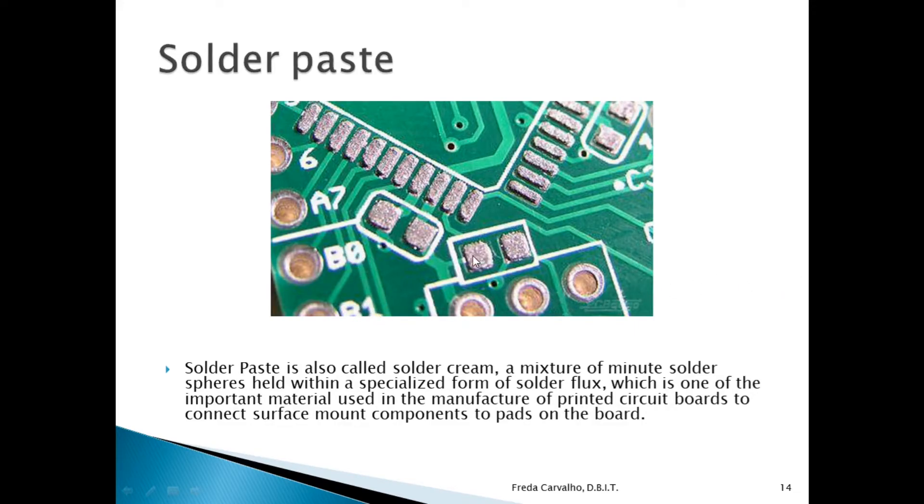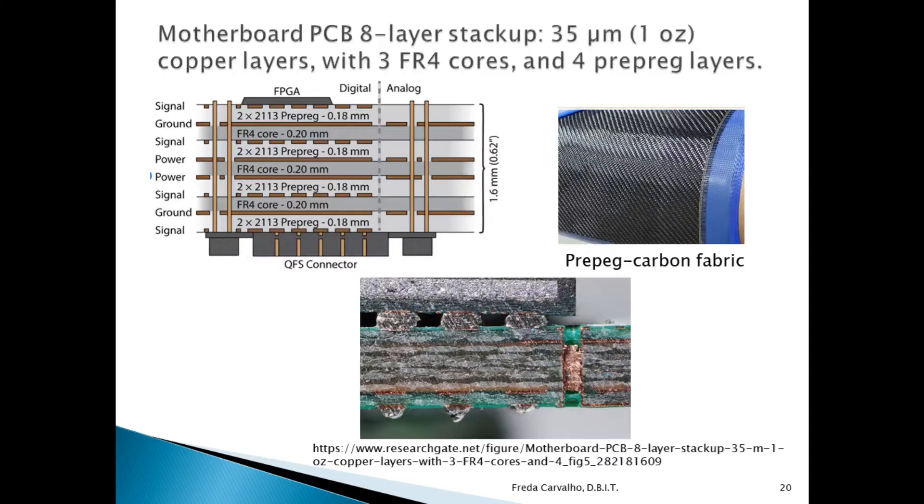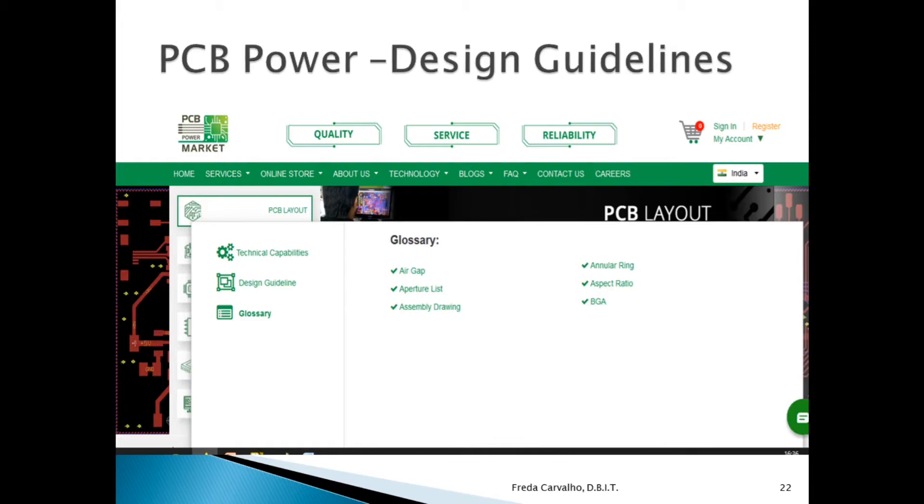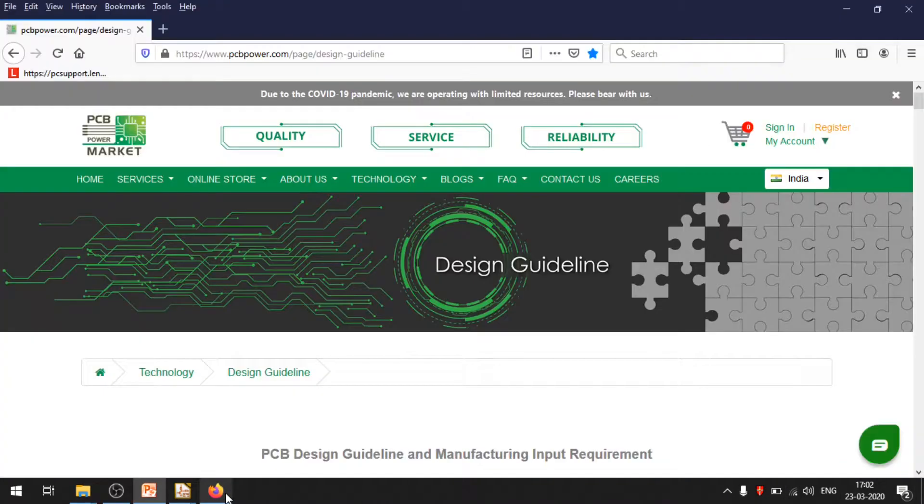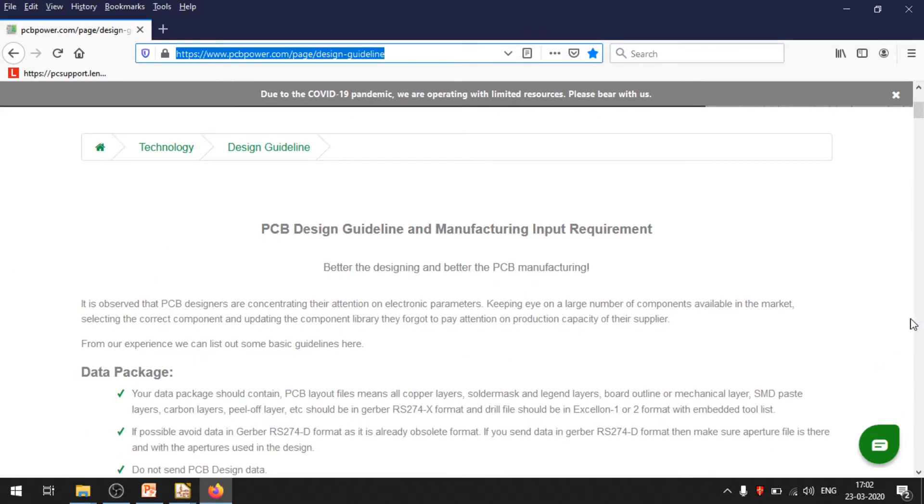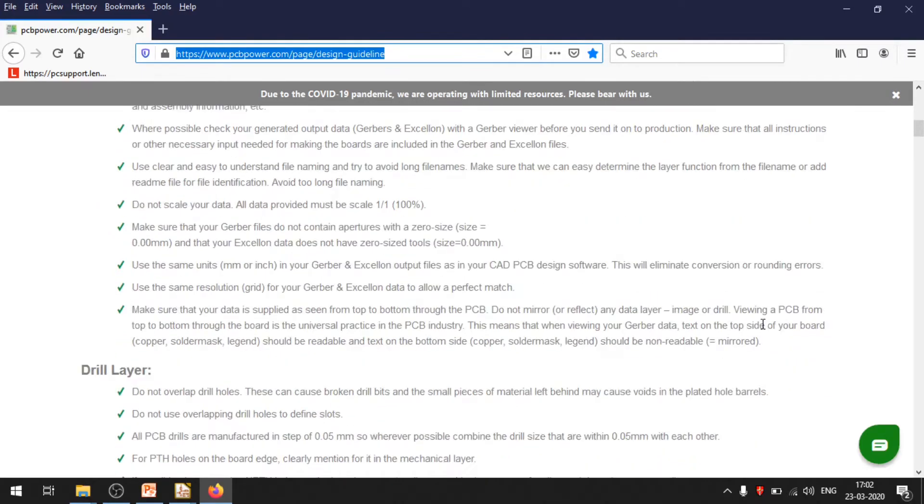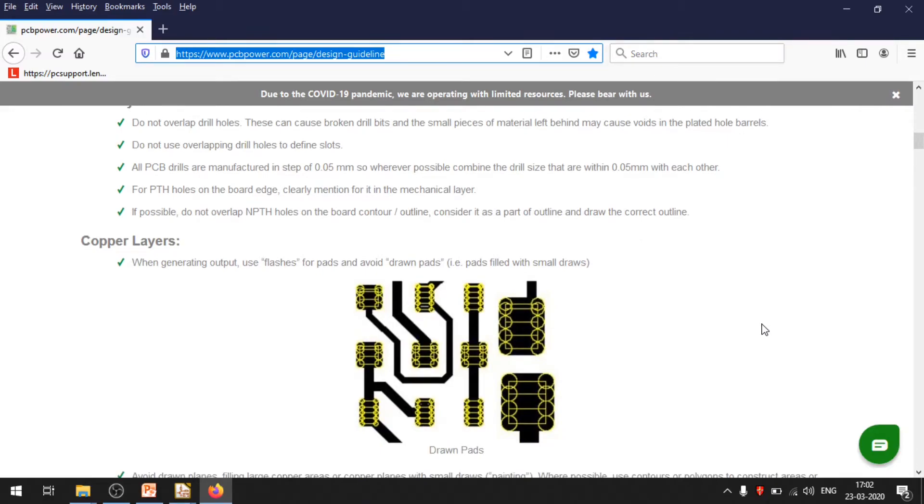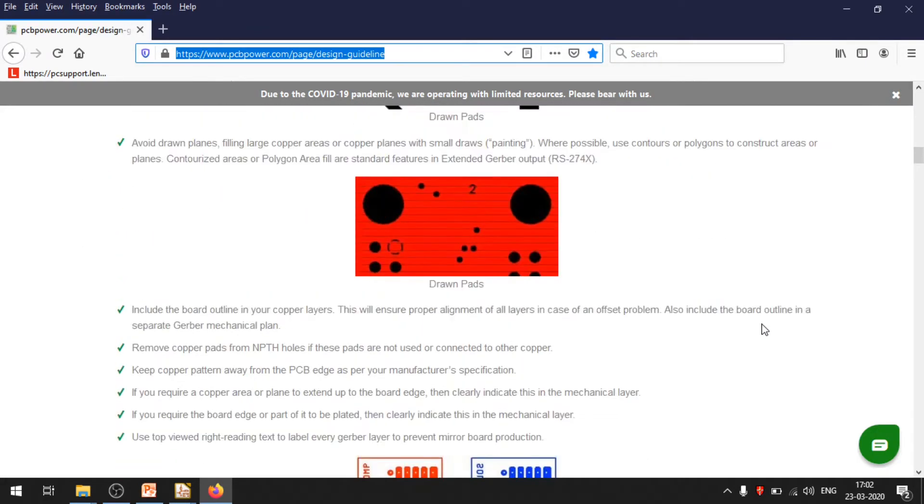So you are aware of pads, the copper, silkscreen, courtyard. Now having known this, let us go ahead and build a bit of our knowledge base. Here before you, I have put the screenshot of PCB Power design guidelines. This is PCB Power which is a PCB manufacturing company. Here you can see they have a set of guidelines that an engineer should be aware of before he gives the files to them online. They look for Gerber files.